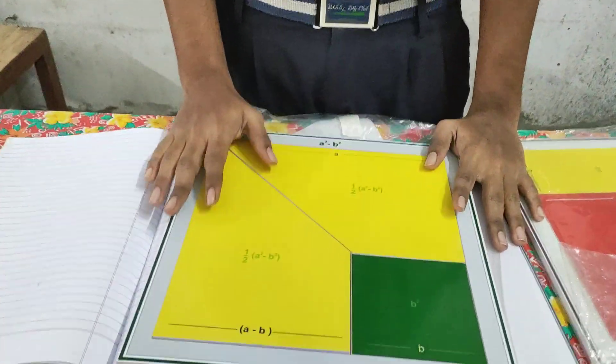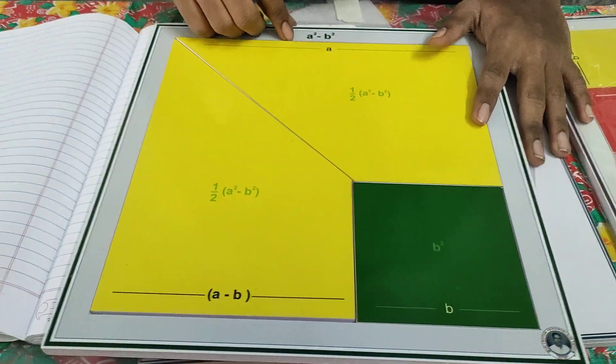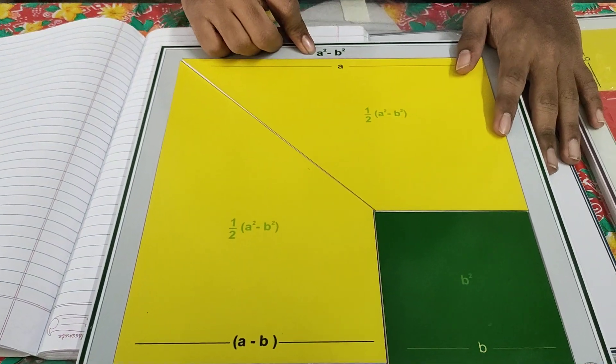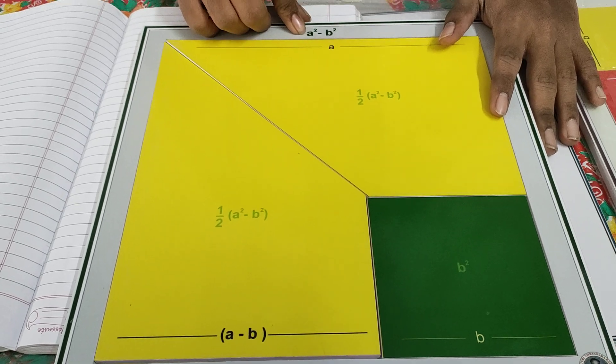Good morning everyone. I am G Anosh from 10th class studying in CVR school. Today I am going to prove the geometric proof of formula a² - b² equals (a - b)(a + b).